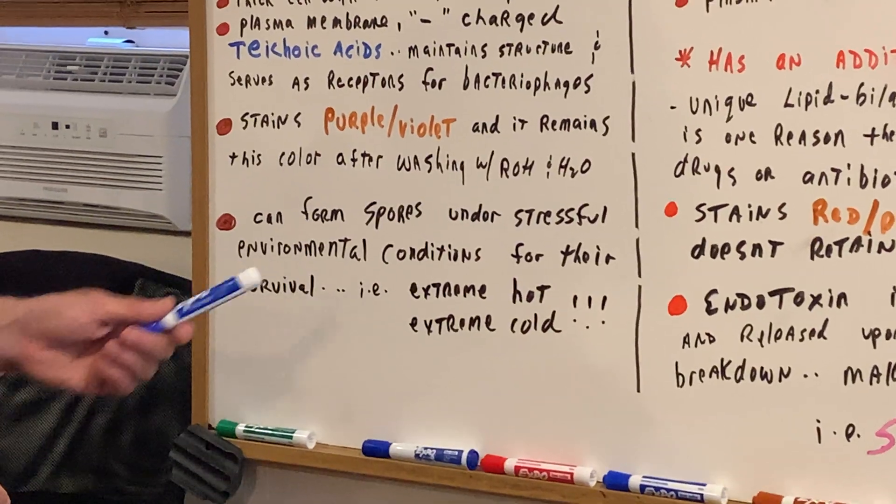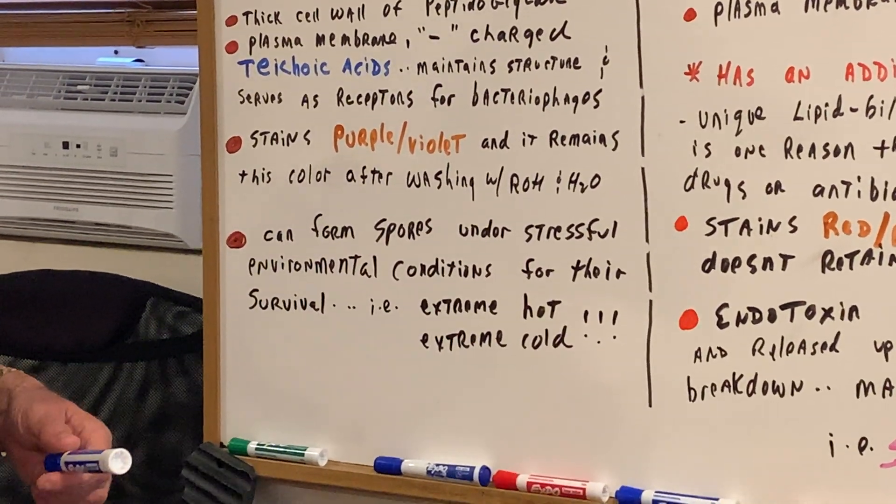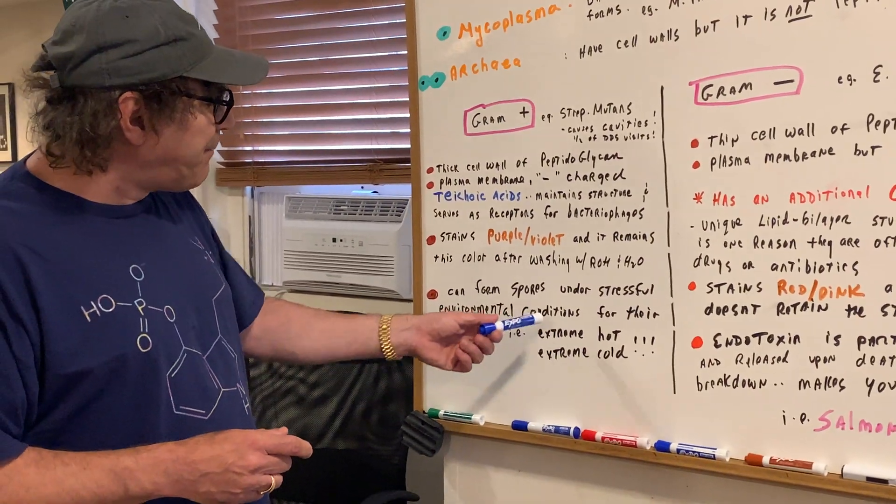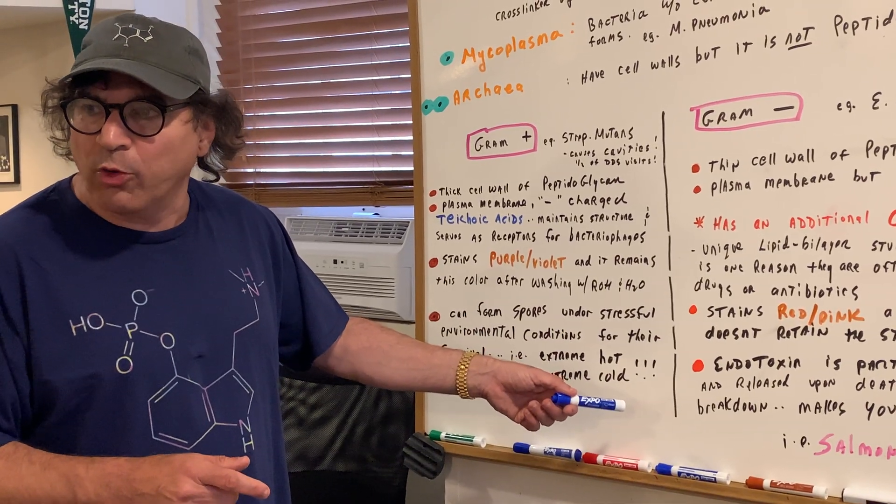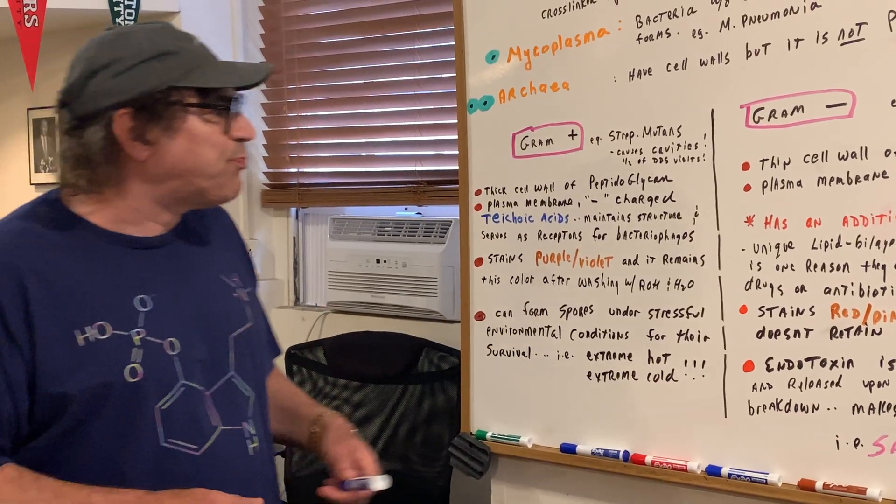Gram-positive bacteria can form spores under stressful environmental conditions for their survival. There was a good question in destroyer on this. An example of these environmental stresses would be extreme hot or extreme cold. So, a gram-positive bacteria is associated with spores.